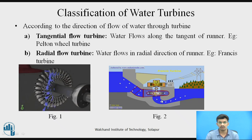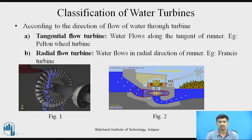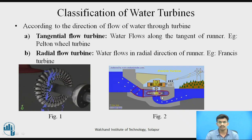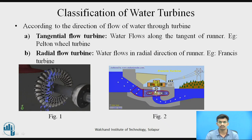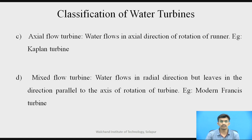In radial flow turbines, water flows in the radial direction of the runner. As shown in figure two, water is applied to the runner in the radial direction to generate electricity. The third type is axial flow turbine, in which water flows in the axial direction of rotation of the runner — the example is the Kaplan turbine. The fourth is the mixed flow turbine, in which water enters in the radial direction but leaves in a direction parallel to the axis of rotation. The example of a mixed flow turbine is the modern Francis turbine.